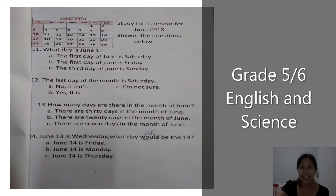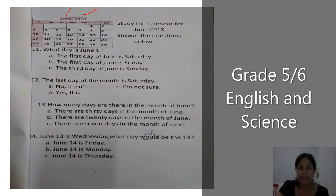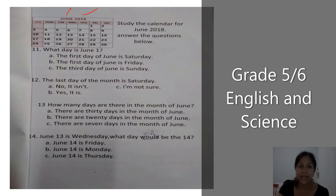Now, study the calendar for June 2018, then answer the questions below. Look at the calendar — it is the month of June, and the year is 2018. How many days are there in the month of June? There are 30 days — it starts with number 1 and ends with number 30. Remember the days of the week: there are 7 days — Sunday, Monday, Tuesday, Wednesday, Thursday, Friday, and Saturday.